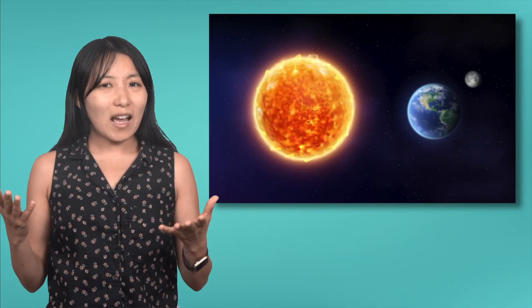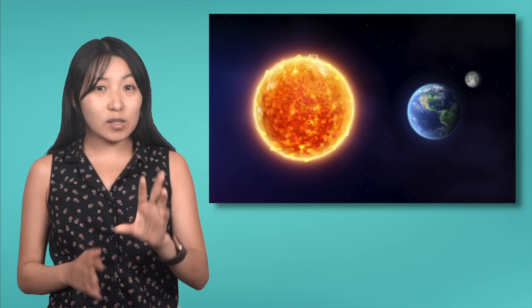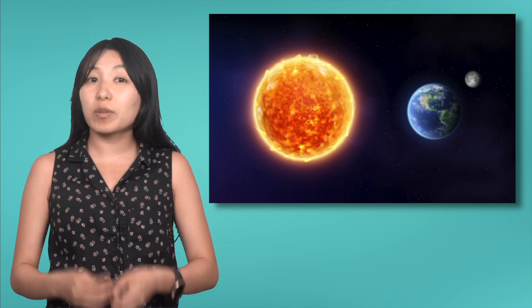So, what happens when the Sun, Earth, and Moon line up perfectly? There are two possibilities, depending on the order of alignment. Let's explore them both.